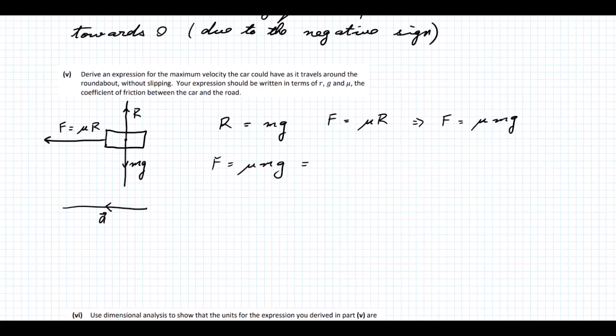If F equals mu Mg, that force must equal Mv²/R, our centripetal force. If we multiply across by R, divide by M, and take the square root, we end up with the square root of mu Mg R over M. We can get rid of that M there, and we finally end up with the square root of mu g R equals V. That's our velocity equation.